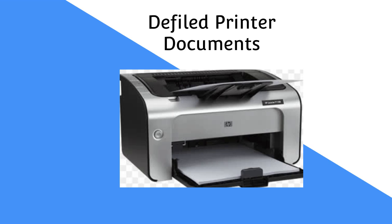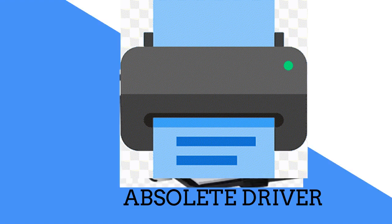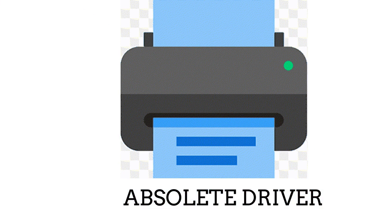Reason 2: Defiled Printer Documents. Damage or defilement to printer records, including driver documents or firmware, can bring about mistake code 6201922A and keep the printer from working accurately. Reason 3: Obsolete Printer Drivers. Using obsolete or contradictory printer drivers can cause similarity issues and trigger mistake messages like 6201922A.